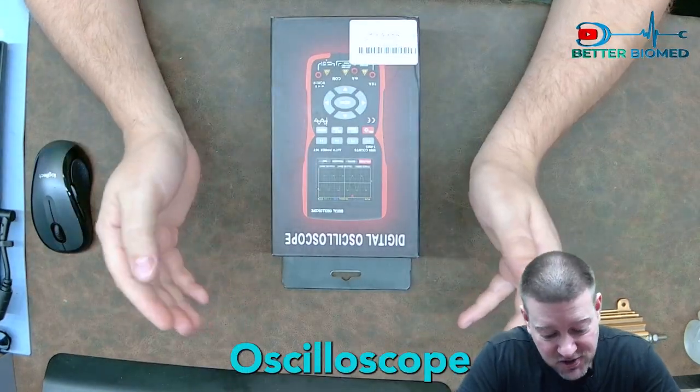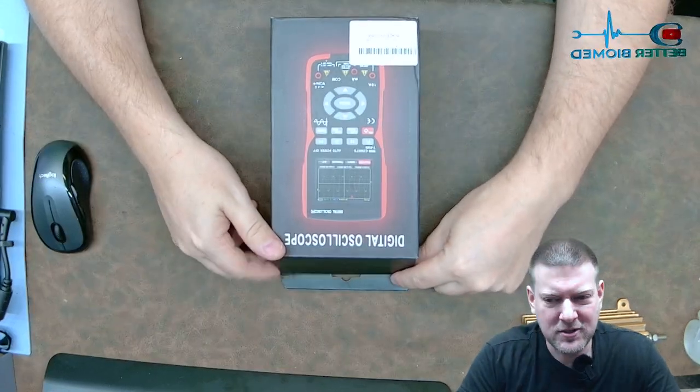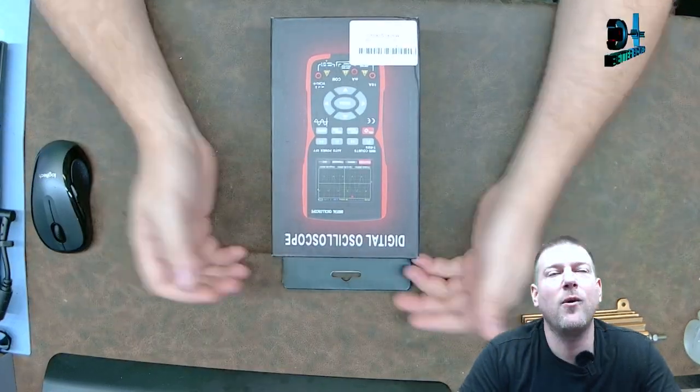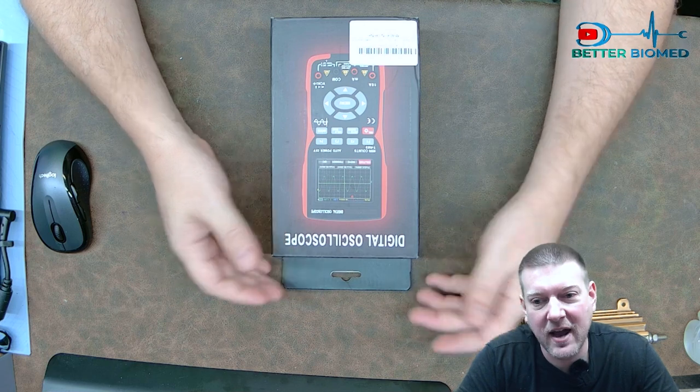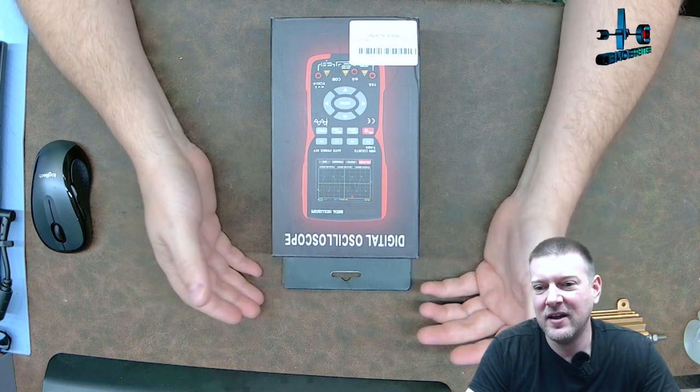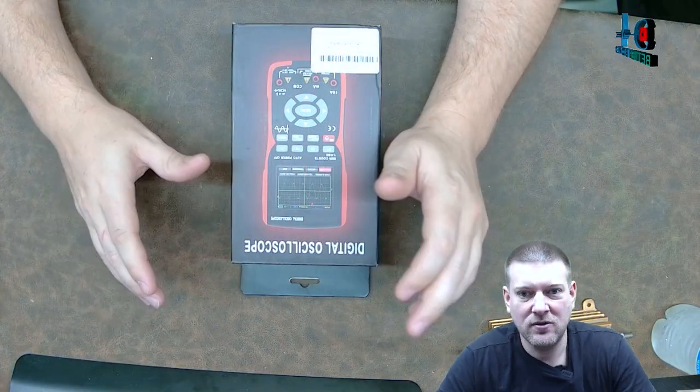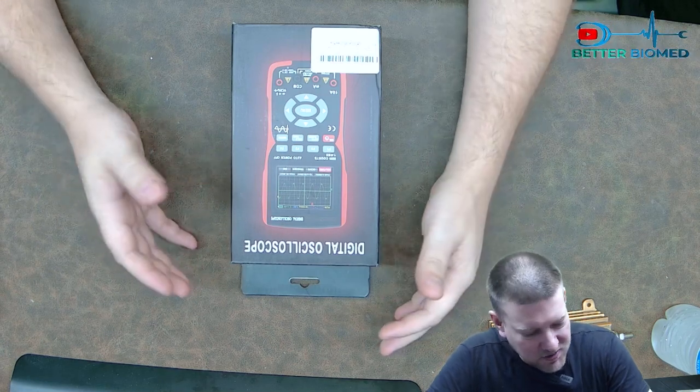This is a digital oscilloscope slash multimeter scope meter, but it's got some interesting features and some stuff that I've always wanted. And I've just never been able to obtain or the interface has been so messy it just hasn't been worth it. So this guy right here is kind of the happy medium between all the meters that I've had historically.